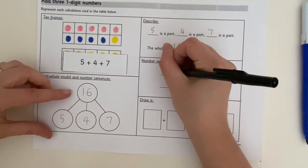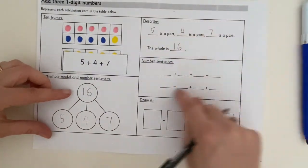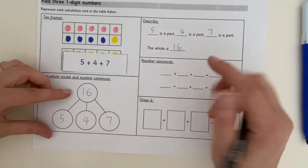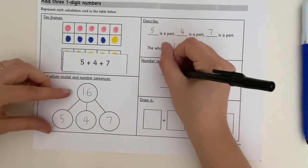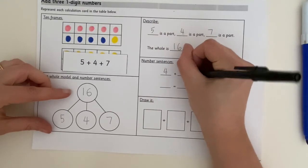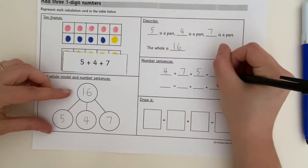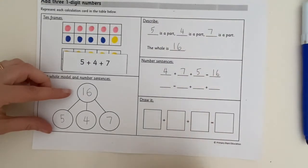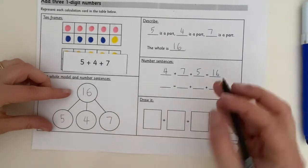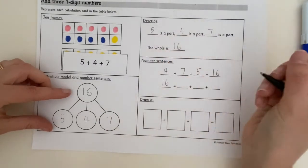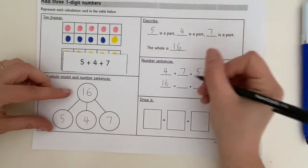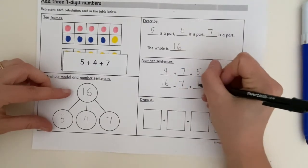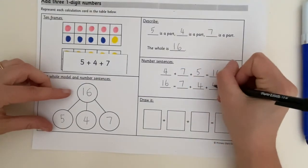Now we can do different number sentences here, we can do it the same order, or we can change it around just for fun. 4 add 7 add 5, always going to be 16. Okay, 16 equals, let's do it another different way now. 7 add 4 add 5.